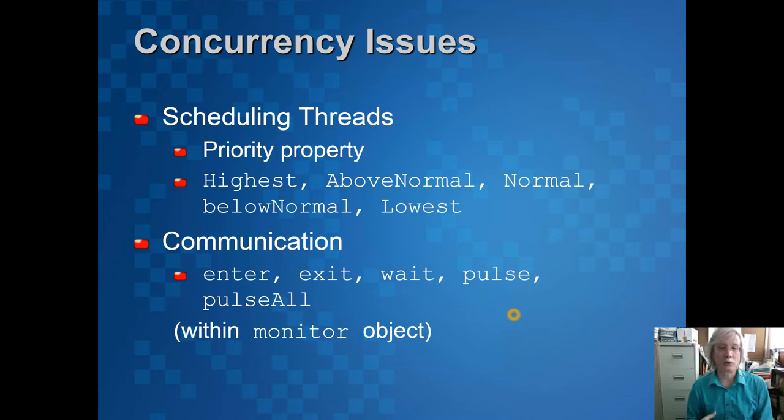Once you start concurrency there's a few issues you need to know about. You can have multiple processes in there. They can have different priorities. Some can run higher and lower. We don't normally alter them but it's worth knowing they can have different priorities. They can also communicate with each other. Within threads, within C#, there are mechanisms that the different threads can communicate. That maps onto the state diagram we showed earlier. Threads can be entered, exit, they can be told to wait, they can be woken up. That's within an object called Monitor.